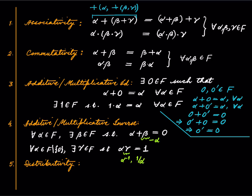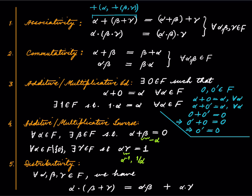Again, all of this is very familiar for real numbers; we are just abstracting those properties out. Lastly, we have distributivity — addition and multiplication gel well together. For all α, β, γ in F we have α · (β + γ) = α · β + α · γ.